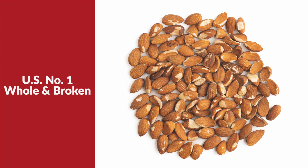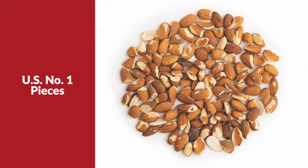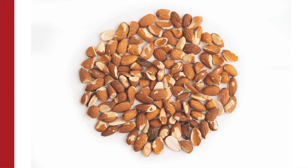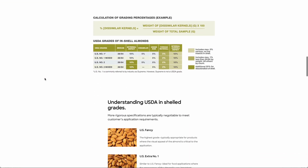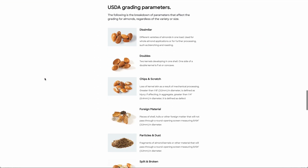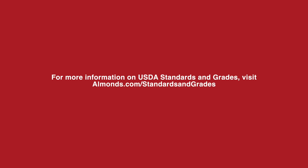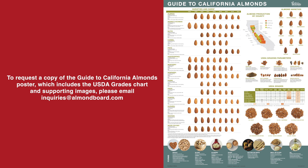Whole and broken and pieces are the final two USDA grades and are often used for manufactured products. Work with your supplier on specific needs and grade requirements. For more information on USDA standards and grades, you can visit almonds.com/standards-and-grades. To request a copy of the Guide to California Almonds poster, which includes the USDA grades chart and supporting images, please email inquiries at almondboard.com. Thank you.